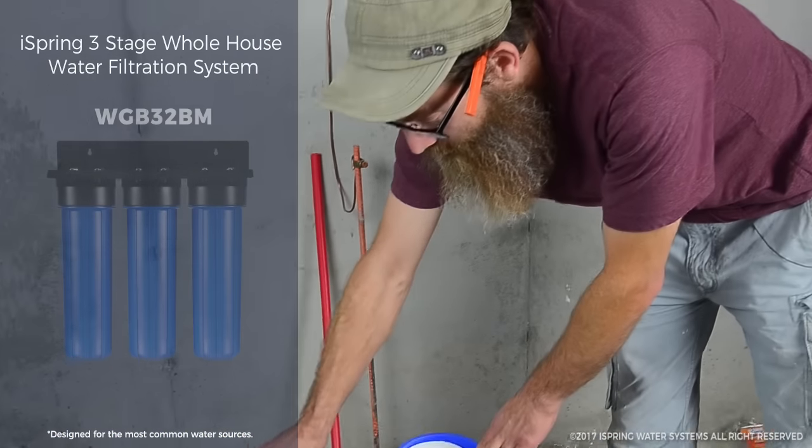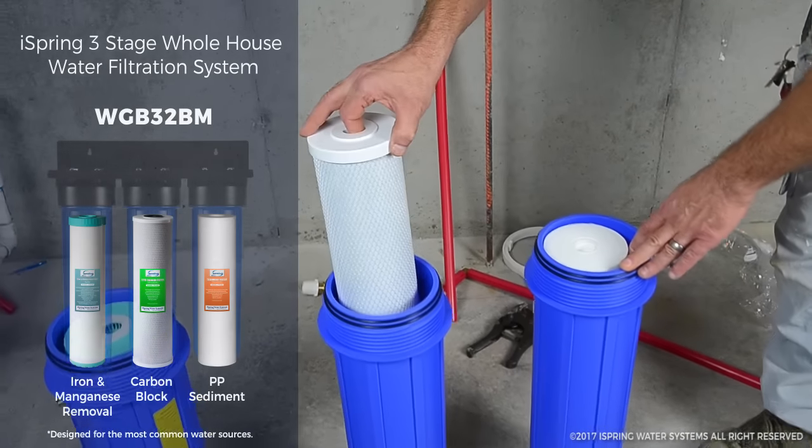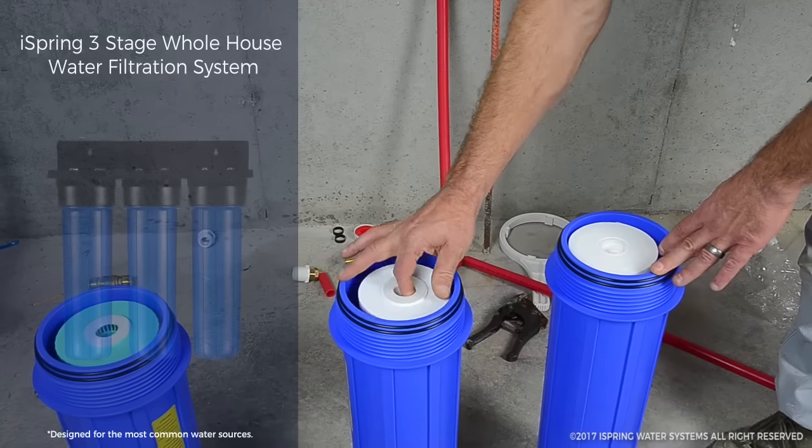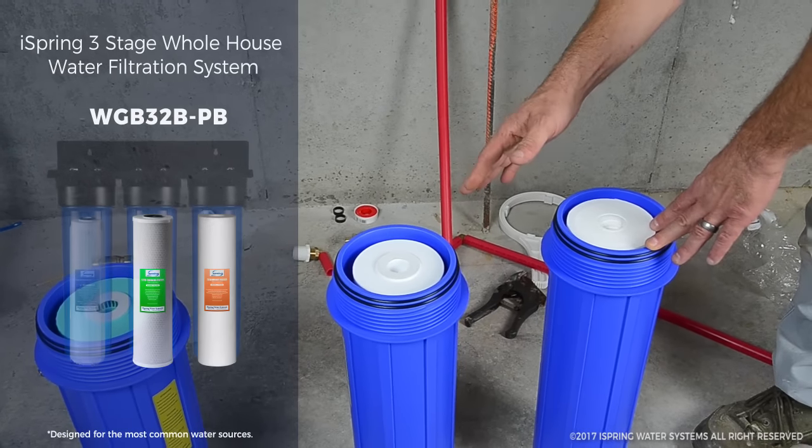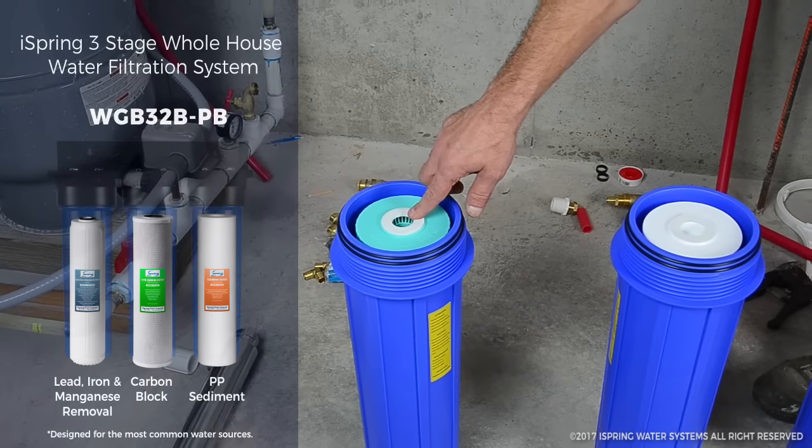The second filter in the series is for picking up chlorine and things like that, the taste, the things that make the water taste funny. And the last one is for the heavy metals of iron and manganese.